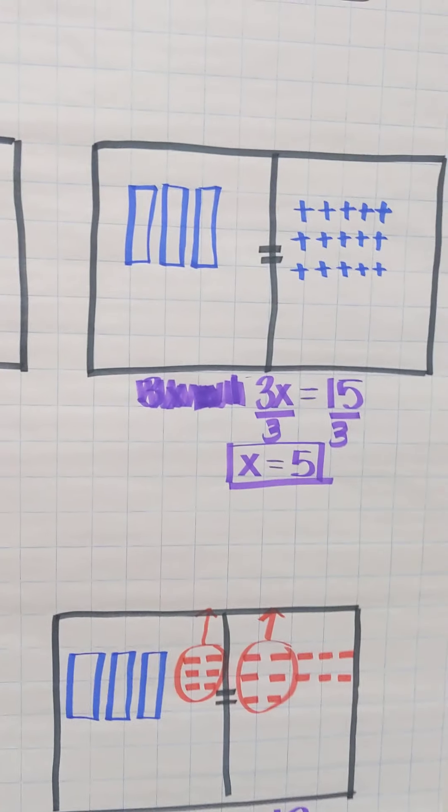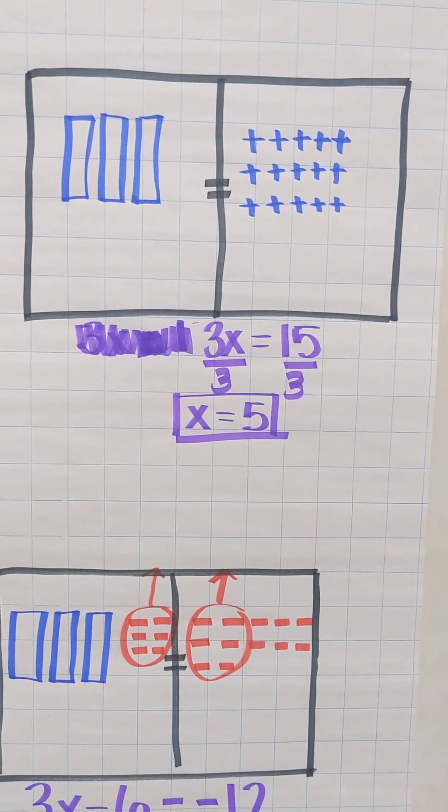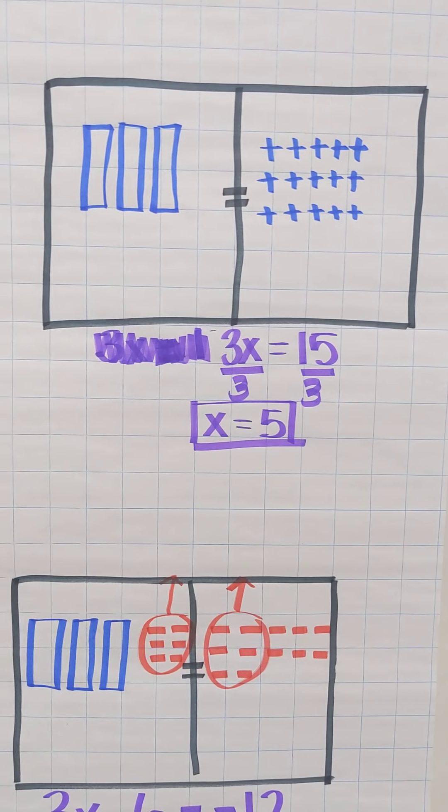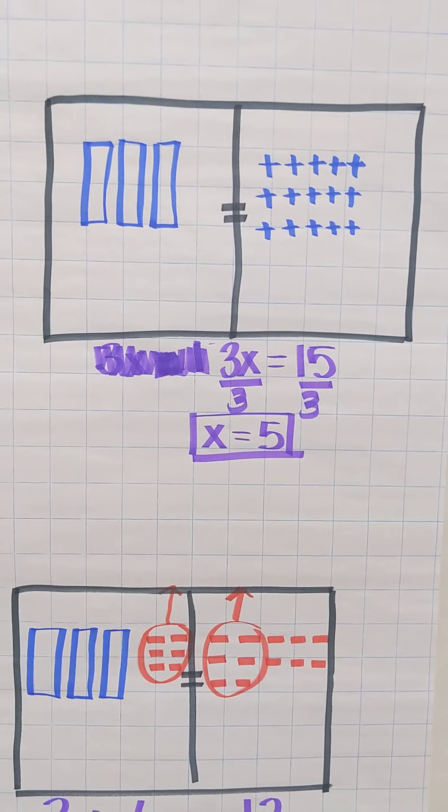As you can see on this side with this one step, we got 3x values equal 15. And again, we undid that multiplication by dividing.